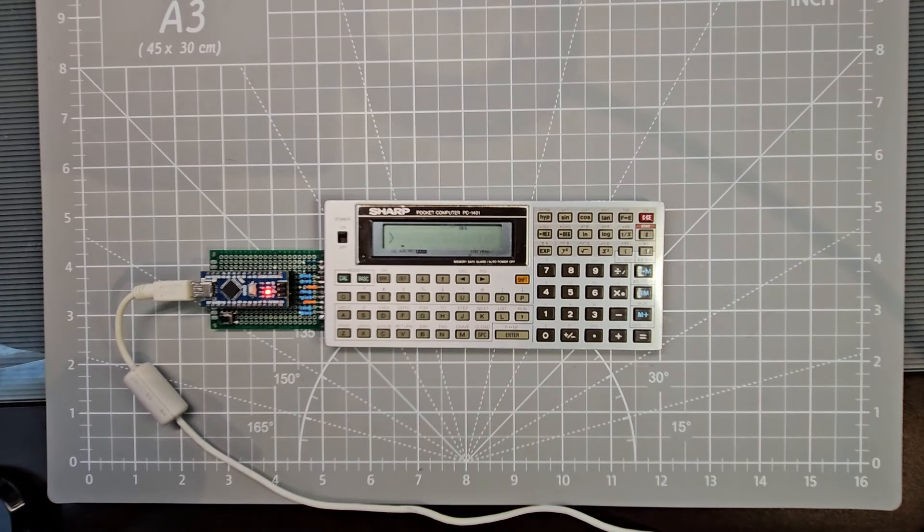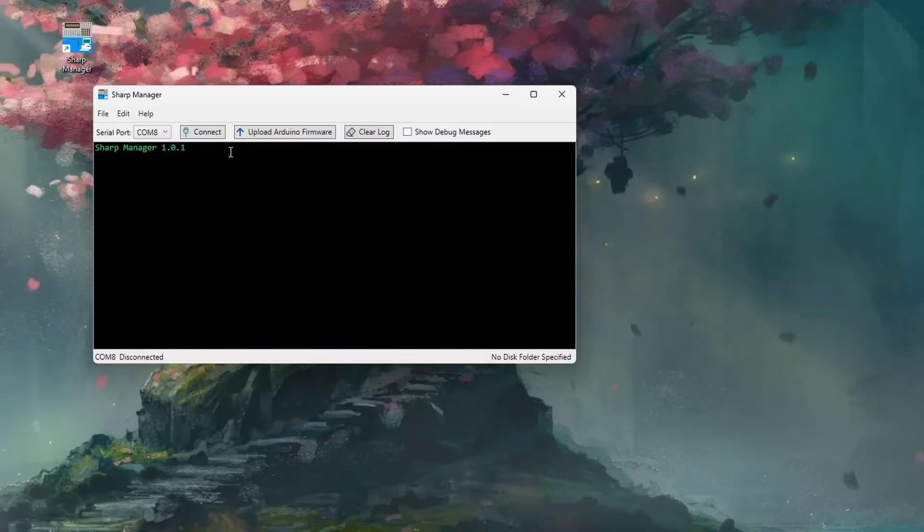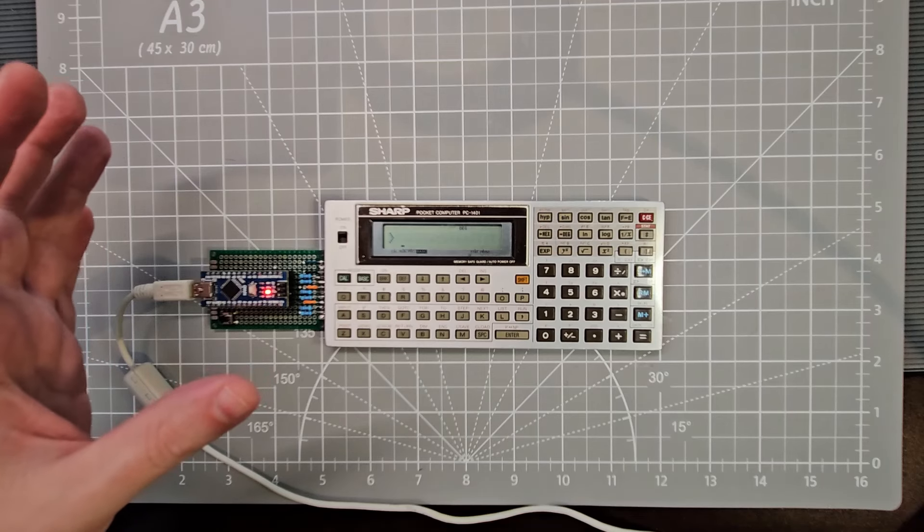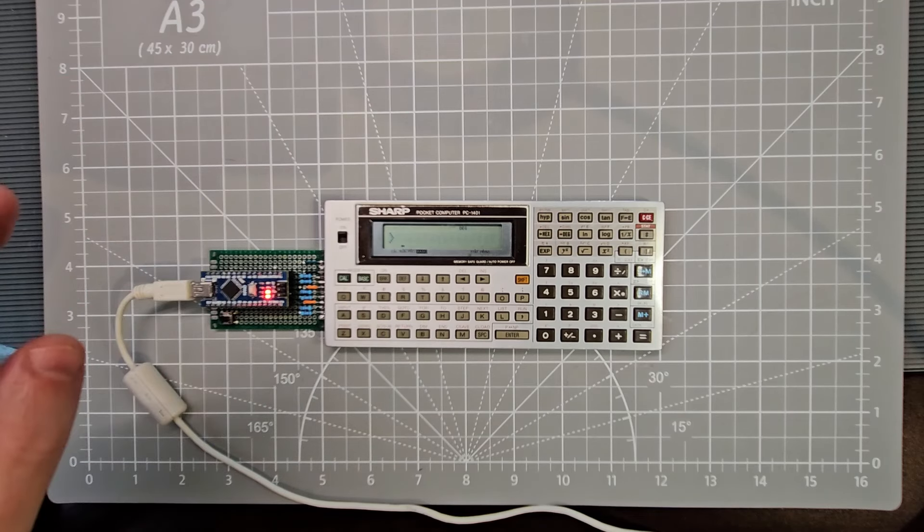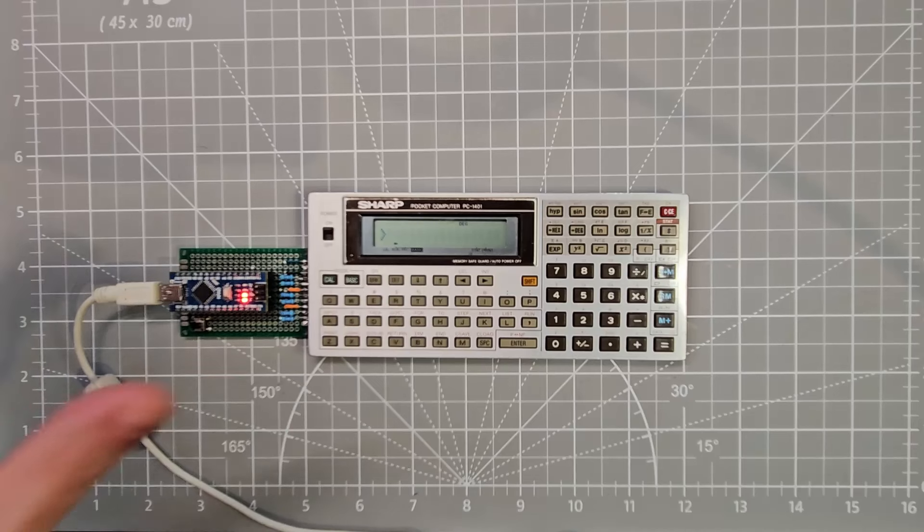So now I'm going to go over and launch the Sharp Manager application on my computer. It'll automatically detect the COM port that it might be connected to. Otherwise, you can pick from available COM ports. Hit connect. It'll print that it's Arduino driver and start blinking again and we're good to go.